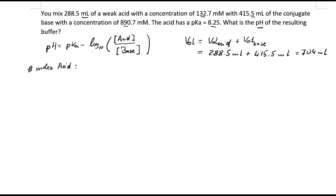What we need to calculate would be 288.5 times 10 to the minus 3 liters times the concentration of the acid, so that would be 132.7 times 10 to the minus 3 mole per liter. That would give us for the acid, if we put that into a calculator, 0.03828 mole. So that is the number of moles for the acid.